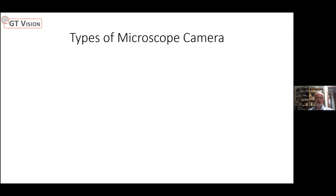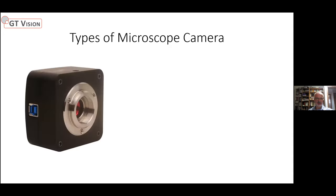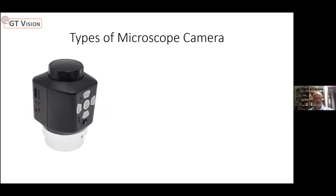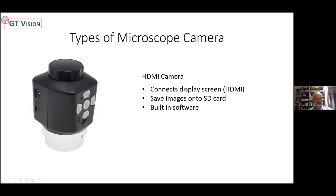There are several general types of microscope camera. The basic type is a USB camera — it has a USB connection and a c-mount that connects to the microscope, and connects via USB to a PC or Mac running camera control software. Another type is an HDMI camera, which connects to a display screen via HDMI. You can save images onto an SD card, and there's built-in software accessible via menu buttons to optimize the image.